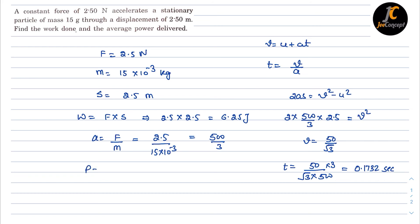Now power is work upon time. So that means 6.25 upon 0.1732 will become 36.08 watts, or I can say 36.1 watts.